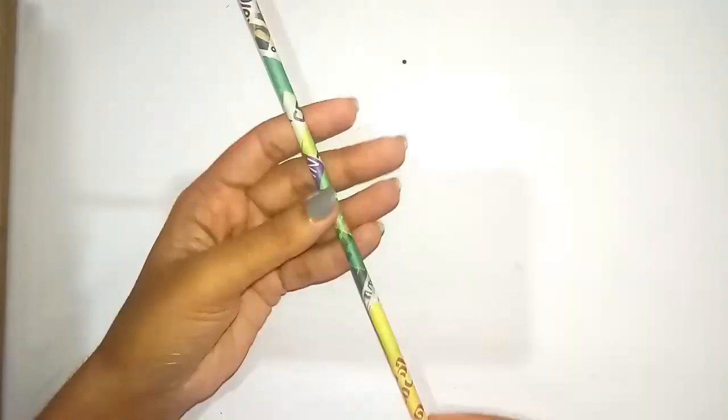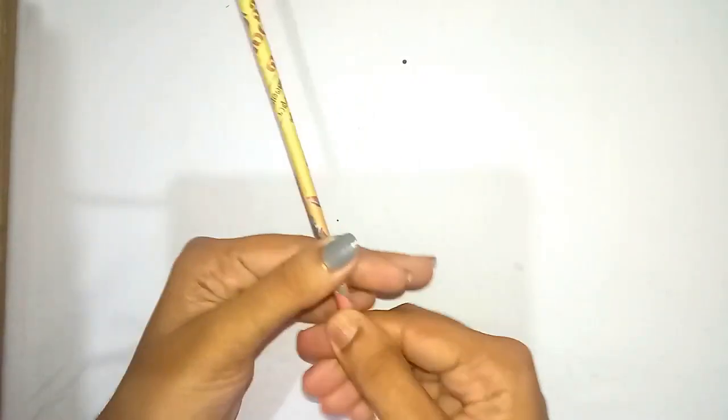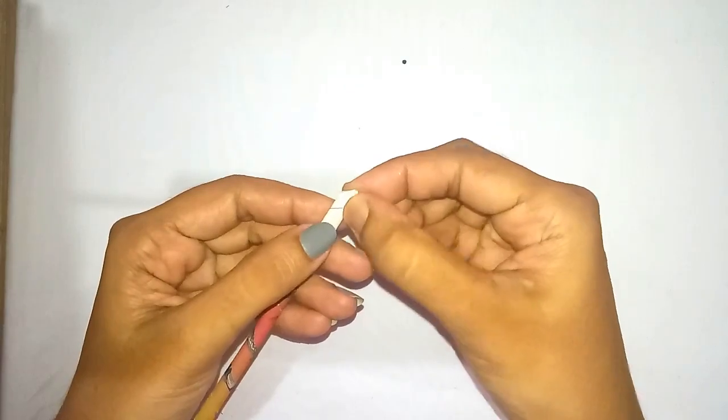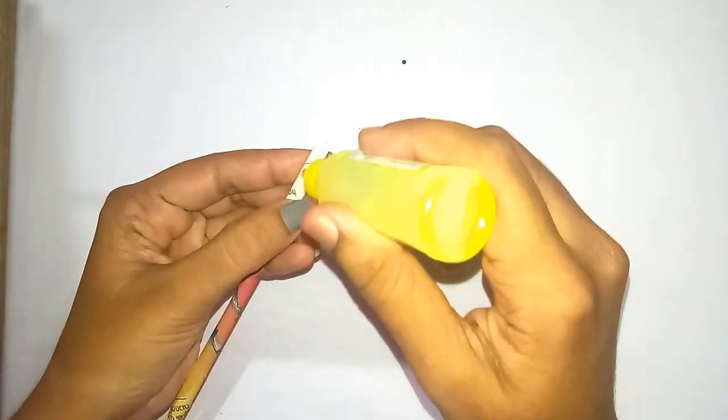I have already made some paper tubes. Take a single paper tube, press it with your fingers and make it flat. Apply some glue at the tip of the paper.